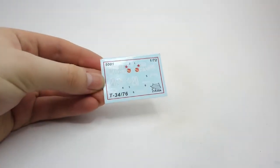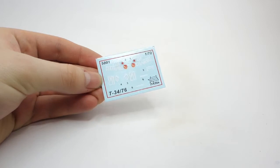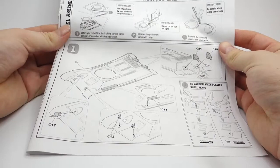In the box there are also decals with markings for two vehicles, and of course instructions for assembling the model kit with painting schemes on the last page.